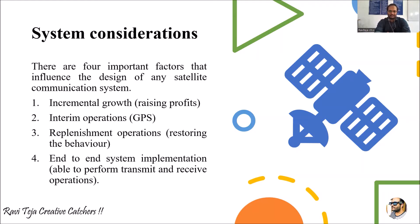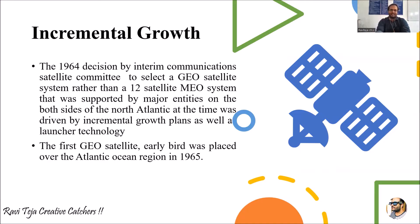The first factor is incremental growth, with respect to raising profits. In 1964, a decision by Interim Communications Satellite — a satellite company — selected a GEO satellite, meaning a geostationary satellite or geostationary Earth orbit satellite, which is very far away from the Earth. These satellites are especially used to cover the whole Earth using a single or a couple of satellites.